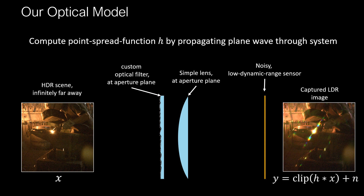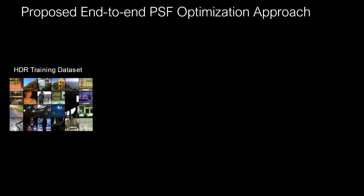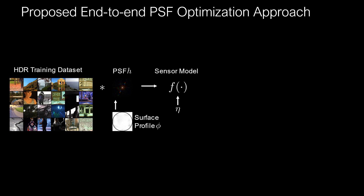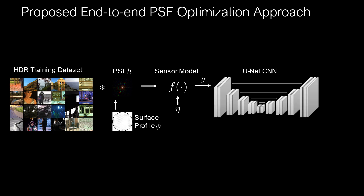We compute the point spread function associated with the system by propagating a plane wave through it. With this optical model, we composed a training dataset consisting of thousands of high-dynamic range images. For a given optical filter, we simulate the corresponding PSF and use it to simulate low-dynamic range sensor images in a physically realistic manner — by convolving the high-dynamic range input image, saturating them on the sensor, and adding noise. A CNN processes the sensor images to estimate the high-dynamic range scenes. Using a loss function, we calculate an error which is back-propagated not only to the neural network parameters, but also all the way into the physical design parameters of the camera — here, the surface profile of the optical filter.